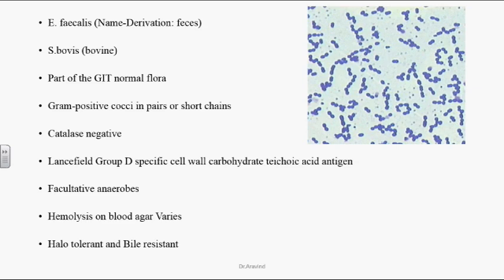Streptococcus bovis, the second organism, is non-Enterococcus. It is referred to as non-Enterococcus because it is transmitted to humans from bovine animals — it is bovine in nature. That is why Streptococcus bovis is a non-Enterococcus, whereas Enterococcus faecalis is an Enterococcus organism.